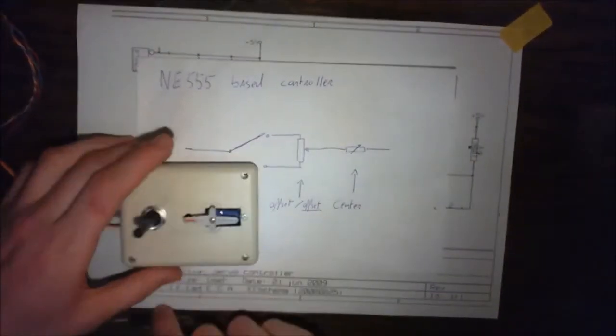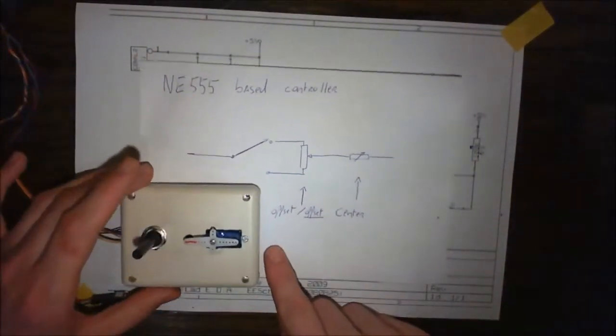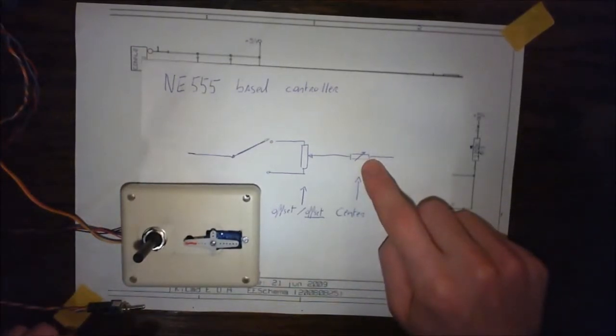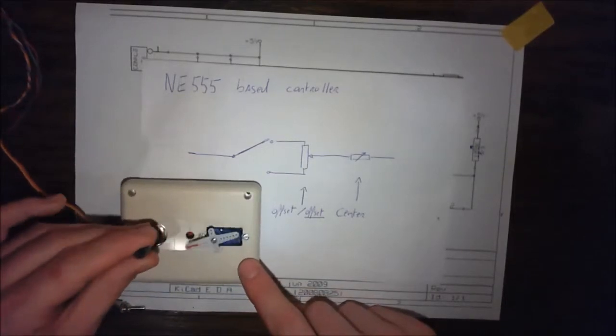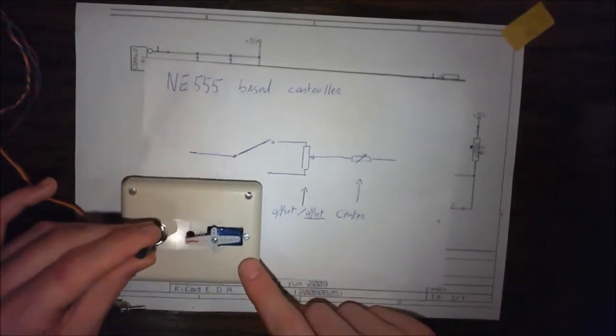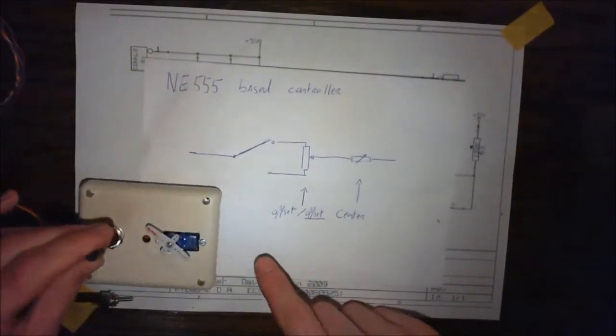As you can see here, I've used a variable resistor on the controller board to send to the servo. Now I can use the potentiometer to turn it, and the switch.